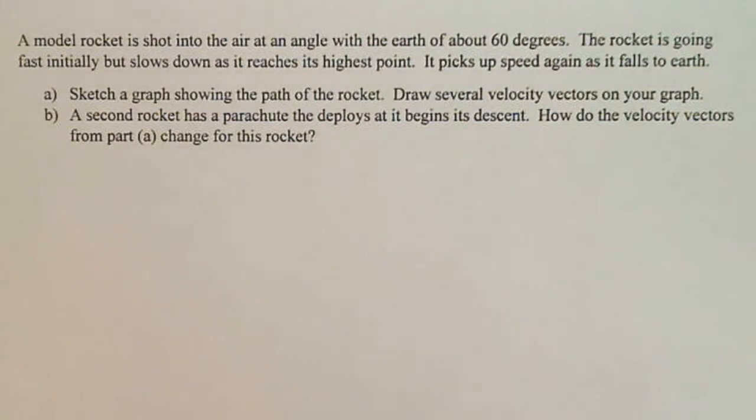A model rocket is shot into the air at an angle with the earth of about 60 degrees. The rocket is going fast initially but slows down as it reaches its highest point. It picks up speed again as it falls to the earth.